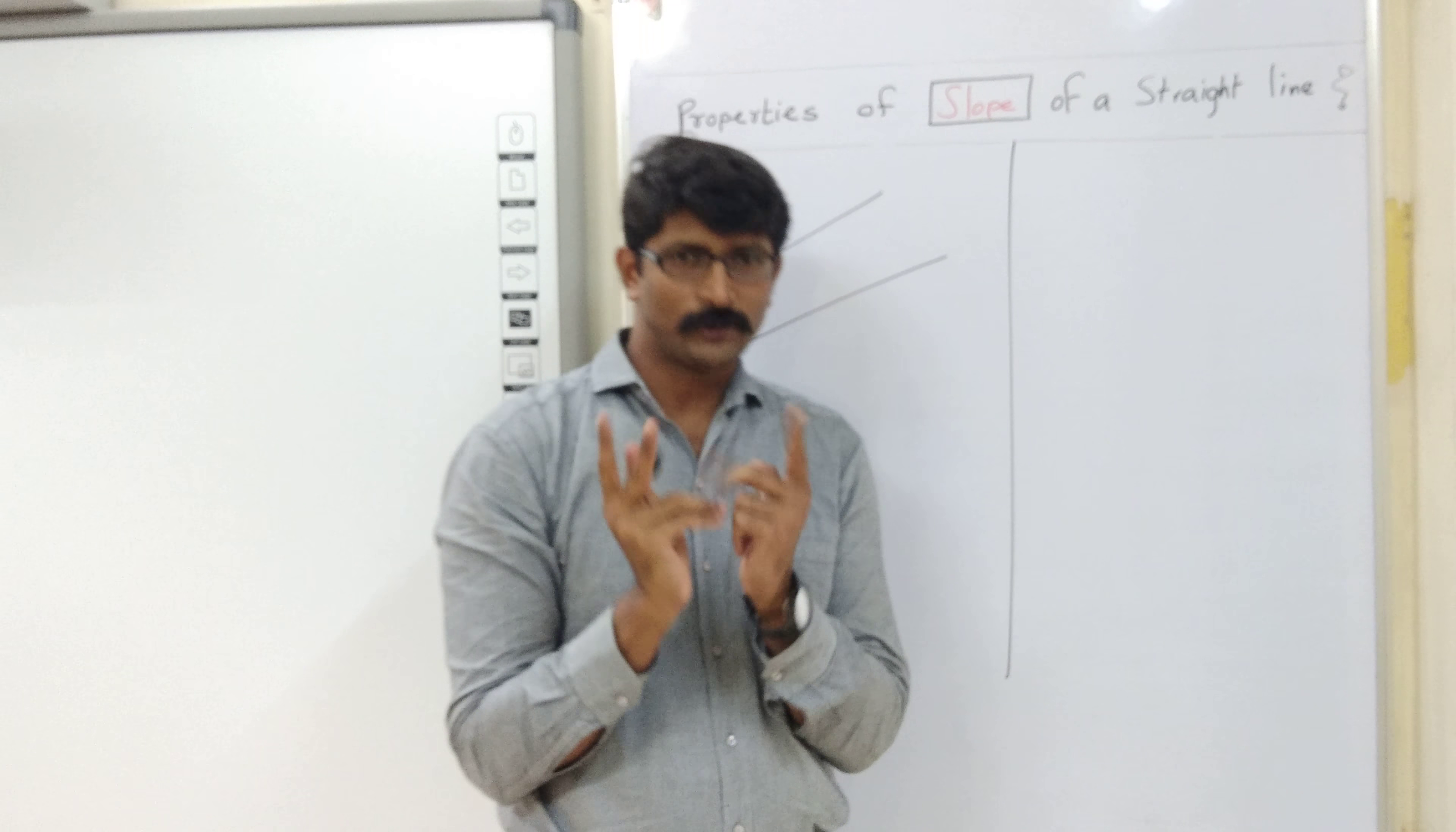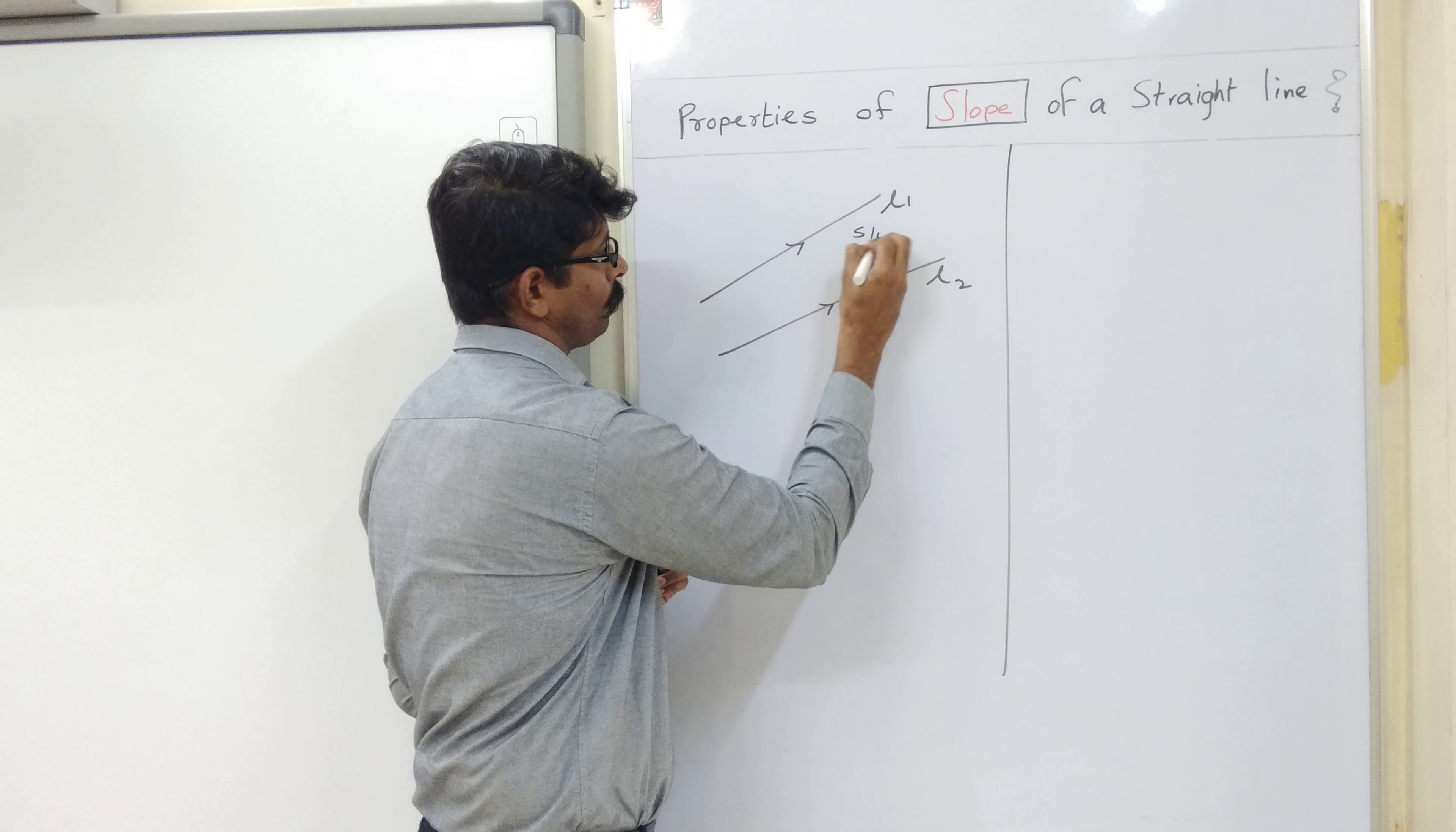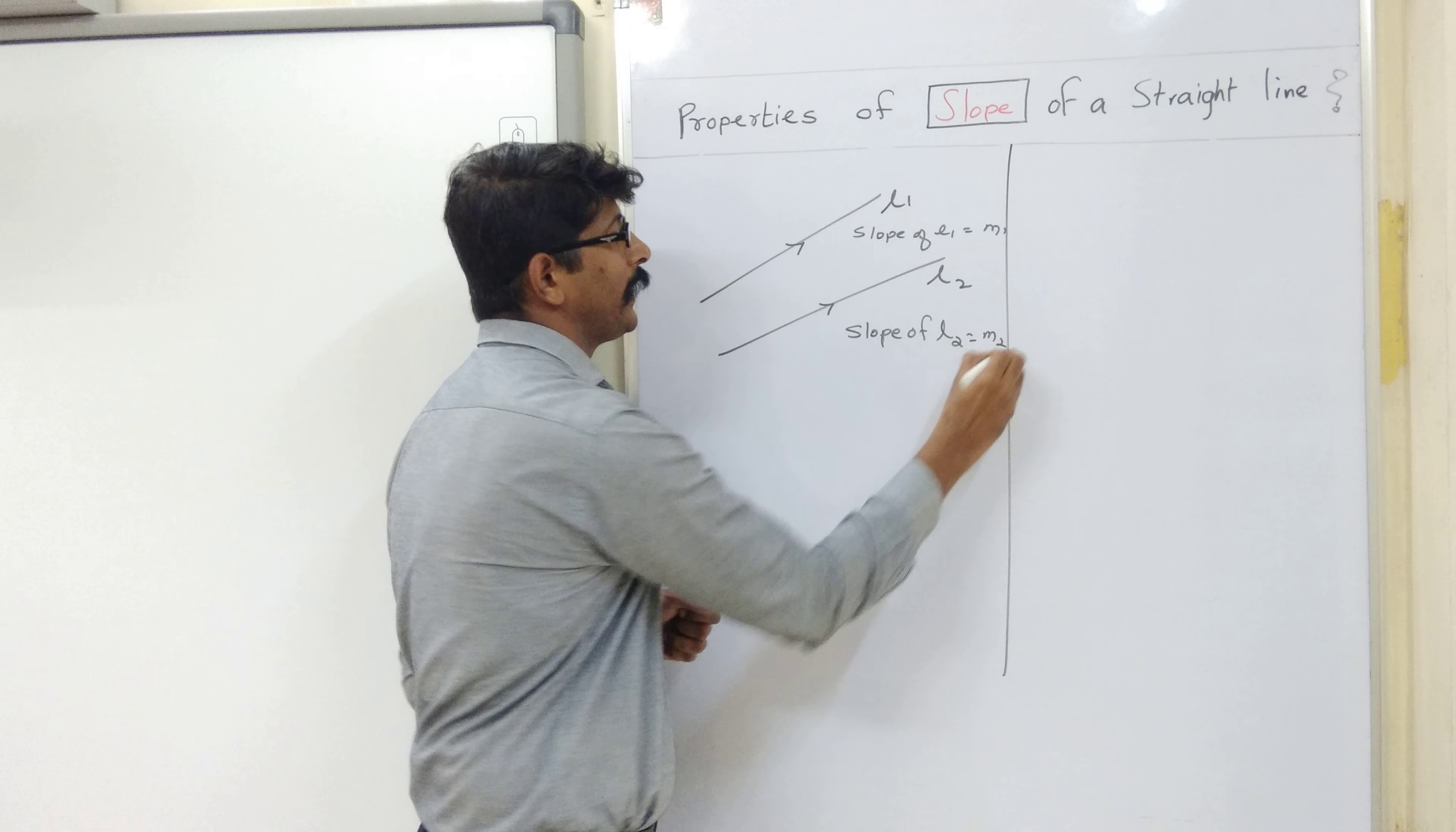First property, when the two lines are parallel. Let's say, these two lines are parallel. This is line 1 and this is line 2. If two lines are parallel and the slope of this line 1 is say m1 and the slope of line 2 is say m2.